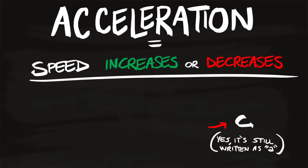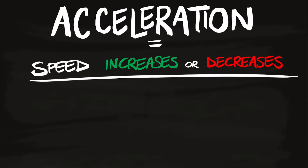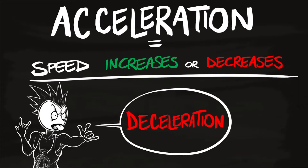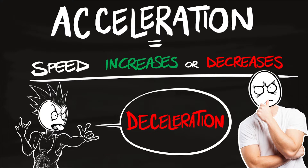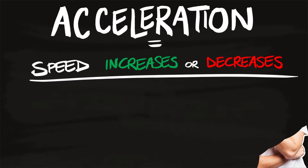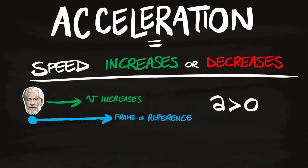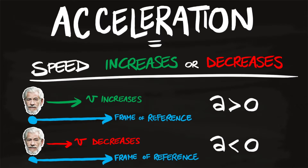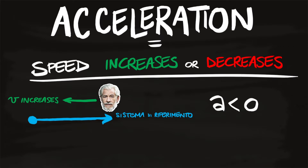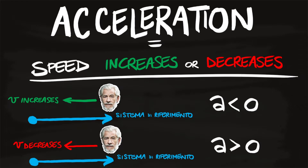Note that in physics we use the word 'acceleration' both when you speed up and when you slow down. Some people occasionally say 'deceleration,' but often 'acceleration' is used even when velocity is decreasing. To tell whether you're speeding up or slowing down, look at the sign. If grandpa moves in the direction of the frame of reference and speeds up, acceleration is positive; if he slows down, it's negative. Signs are swapped if he moves against the frame of reference.